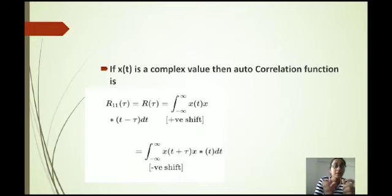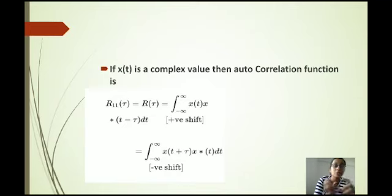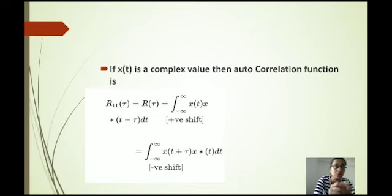If x(t) is a complex-valued signal, then the autocorrelation function R11 equals the integral from minus infinity to infinity of x(t) · x*(t minus tau) dt for positive shift, and for negative shift it is the integral from minus infinity to infinity of x(t plus tau) · x*(t) dt.